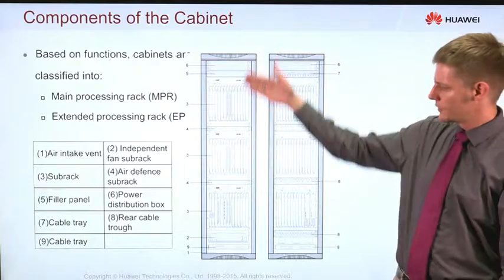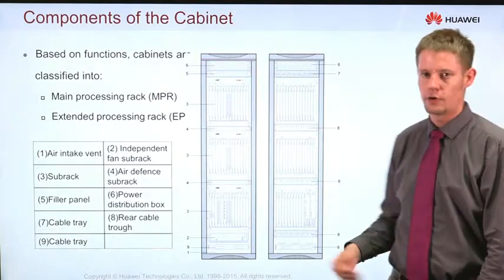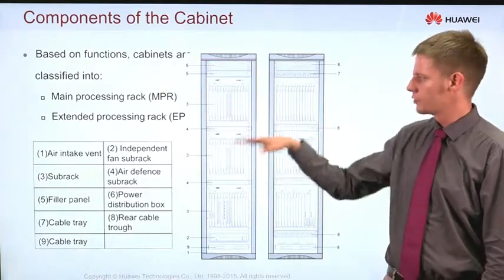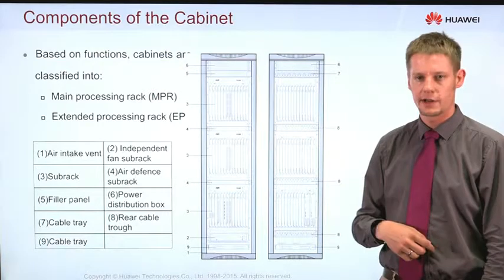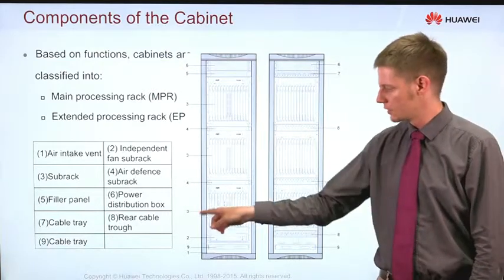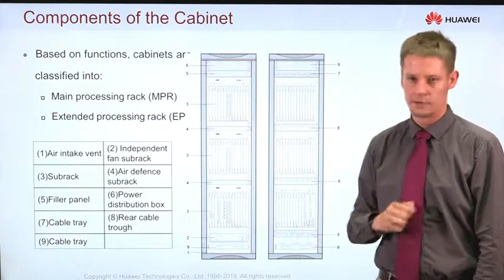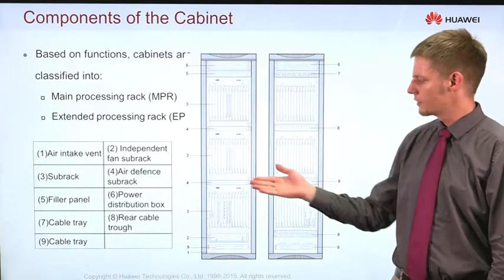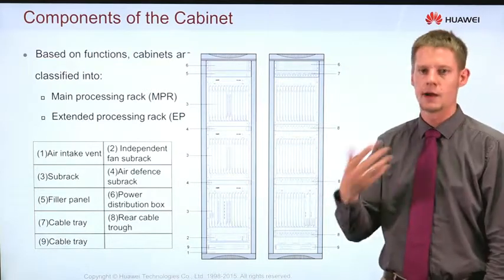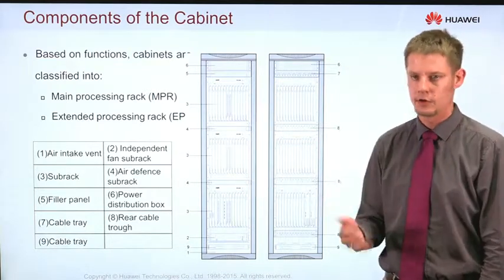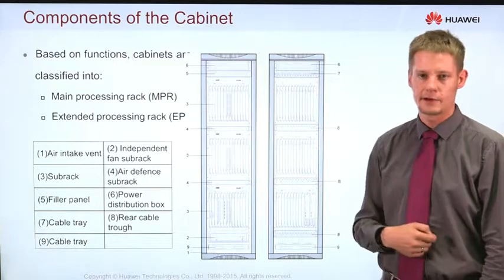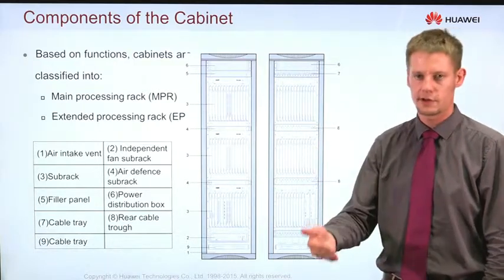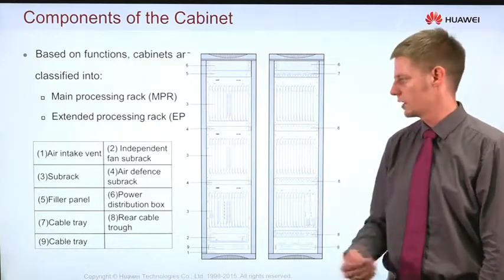Here we see a front view and a rear view of one cabinet, and we see that we can mount up to three subracks in one cabinet, which are depicted with the small number three. We also see that at the front and the back there are boards mounted, so this means that this is a double-sided version of one cabinet where we can mount boards from the front side and from the back side.